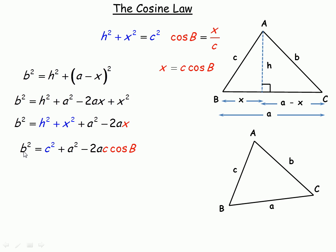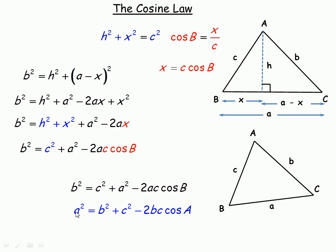Notice the pattern: if I'm finding side b, I need to know the other two sides a and c, and the angle opposite the side I'm finding — angle B. The formula can be written for any side: a squared equals b squared plus c squared minus 2bc cos A; b squared equals a squared plus c squared minus 2ac cos B; c squared equals a squared plus b squared minus 2ab cos C. In each case, the angle used is the one opposite the side being found.